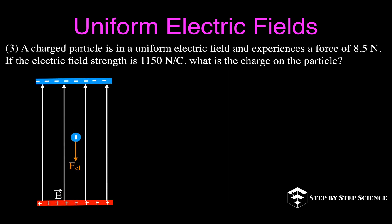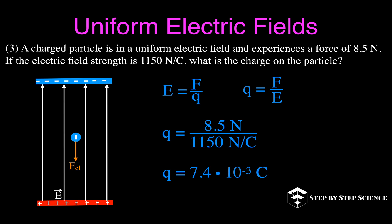Example three: a charged particle in a uniform electric field experiences a force of 8.5 newtons, and the field strength is 1,150 newtons per coulomb. What is the charge? Solving Q equals F divided by E gives 8.5 divided by 1,150, so the charge is 7.4 times 10 to the minus 3 coulombs, or 7.4 millicoulombs.